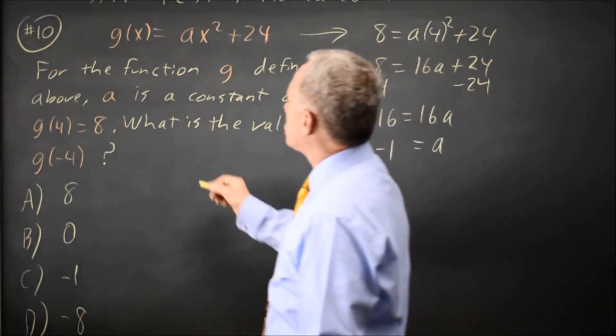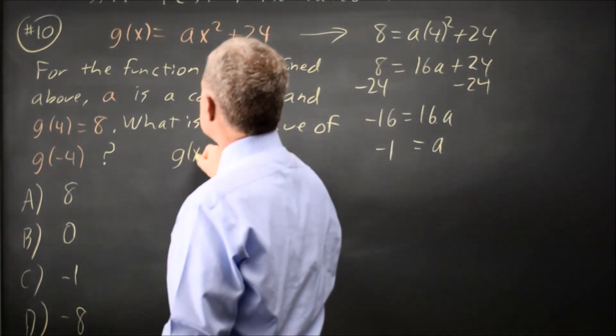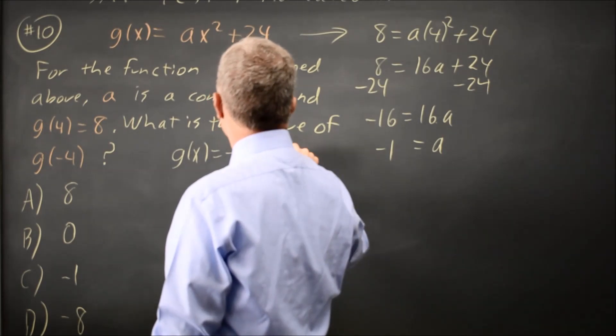Now that we have a, we can rewrite g of x equals negative x squared plus 24.